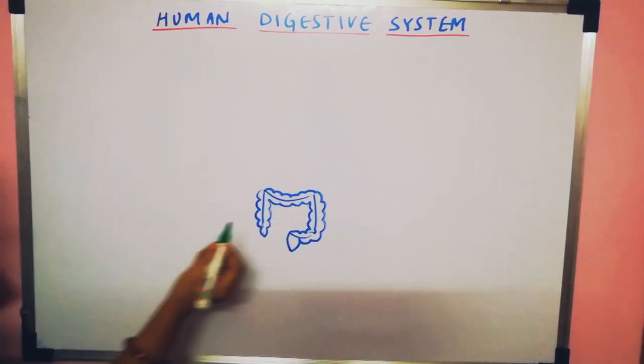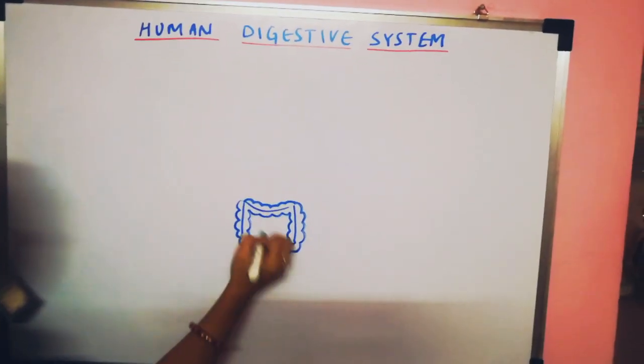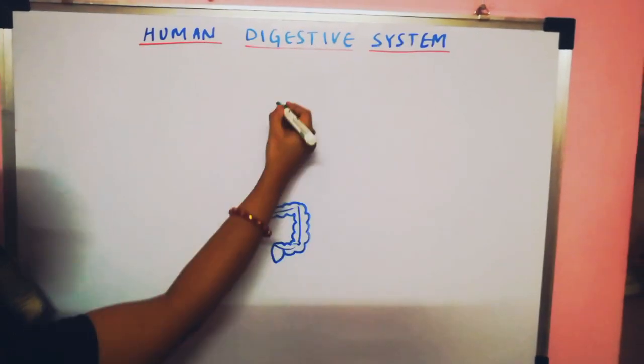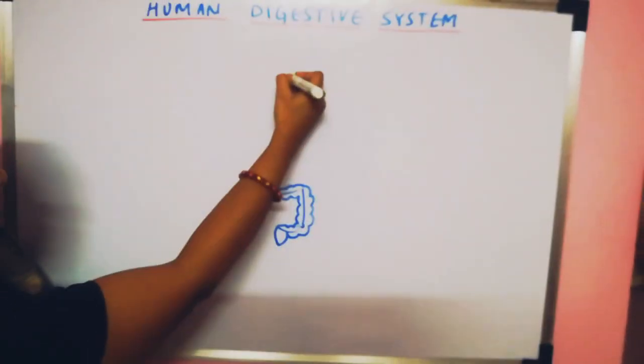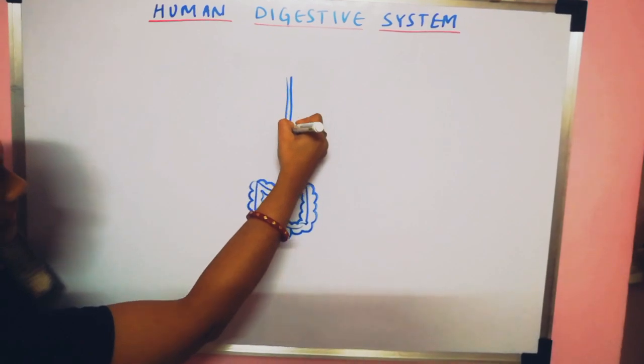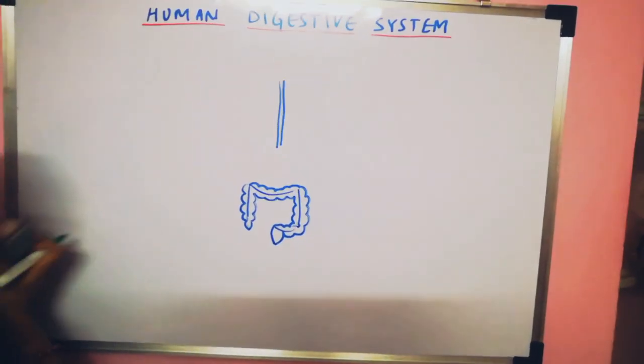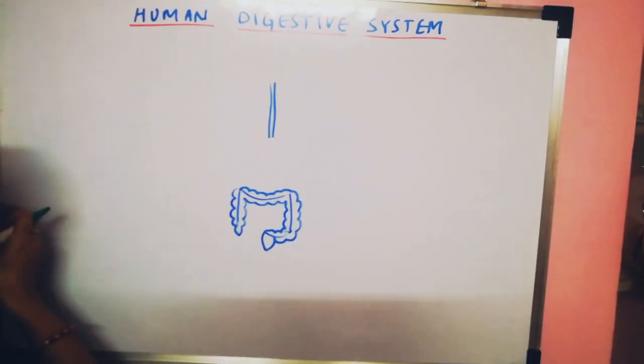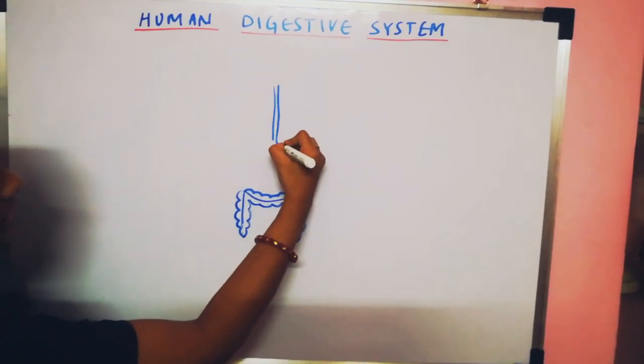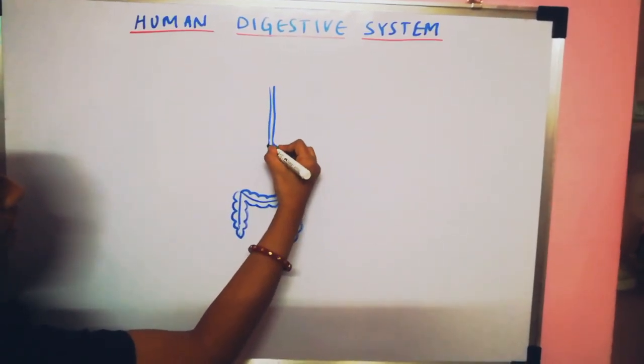Then exactly on top of this intestine part, you have to draw two vertical lines, a tube like structure. Make it short. And then make a J shaped structure, which is your stomach part.